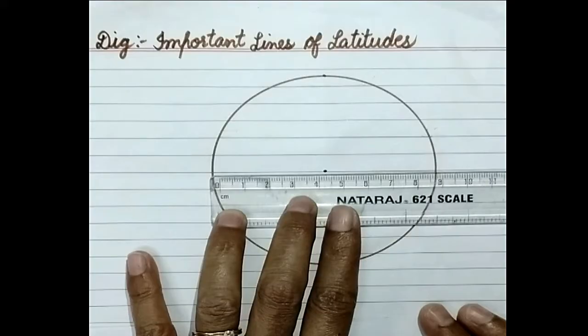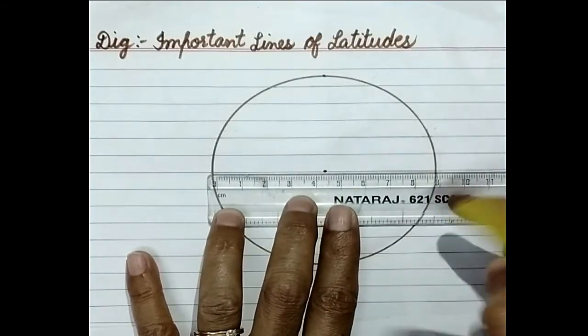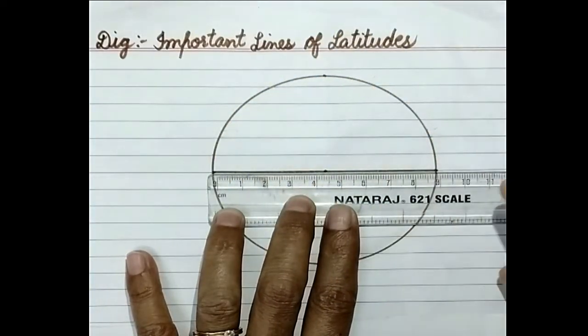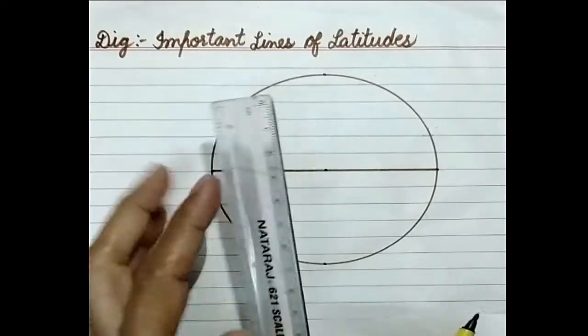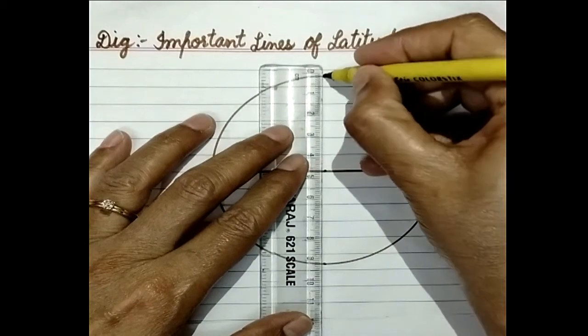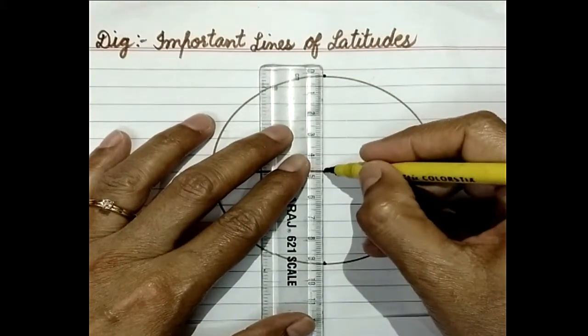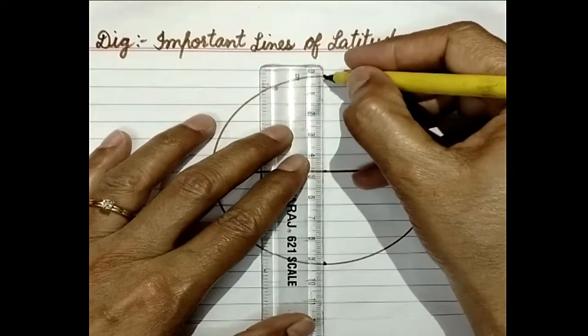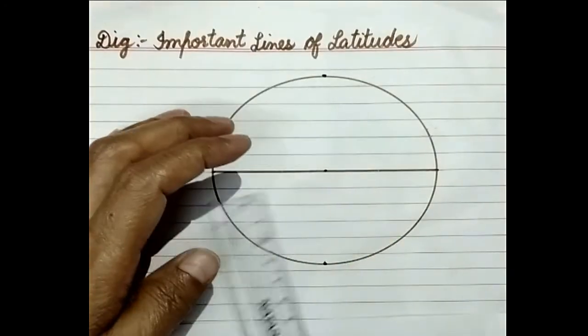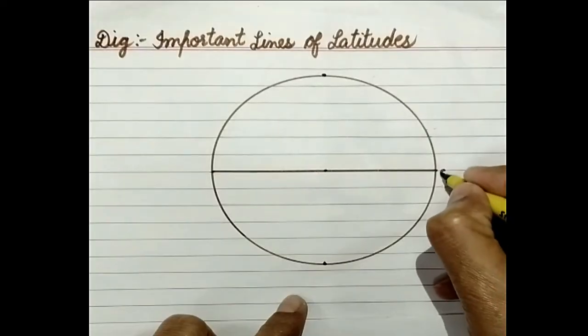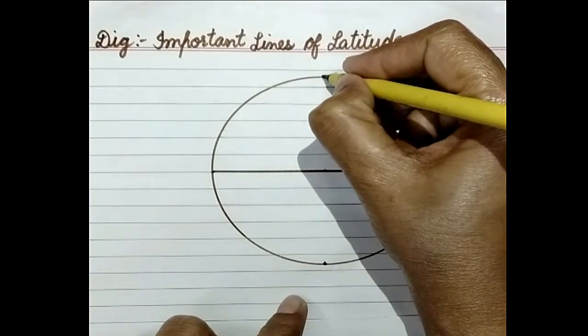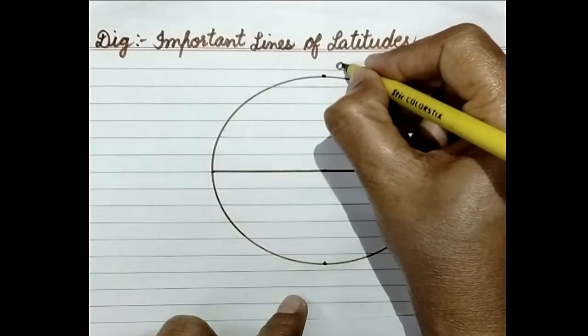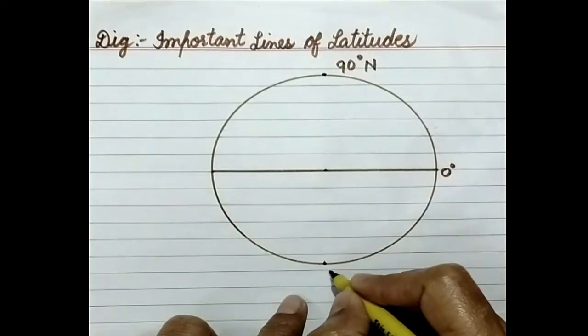Then from the center you are to draw one line this way and put a dot on the outside of the circle, both upside and at the bottom. This is 0 degree. As I have already told you, upside is north, so this is 90 degree north and this side is 90 degree south. You will mark N on the upper hemisphere and S towards the bottom.